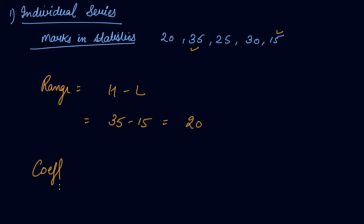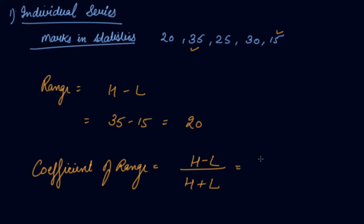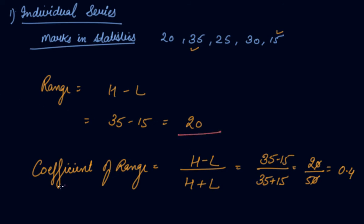Now we have to find out the coefficient of range, that is the relative measure of range. It is equal to highest value minus lowest value divided by highest value plus lowest value. So, 35 minus 15 divided by 35 plus 15, which is 20 divided by 50, and 2 divided by 5 is 0.4. Your range is 20 whereas your coefficient of range is 0.4.